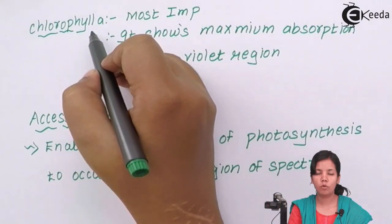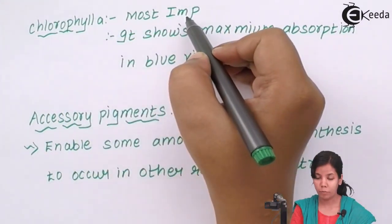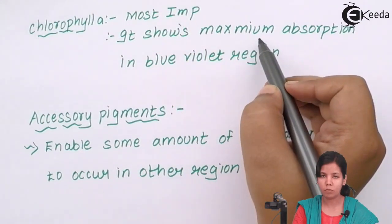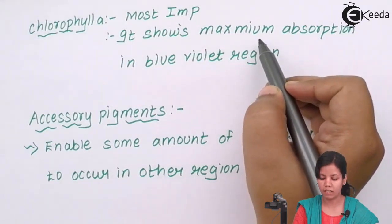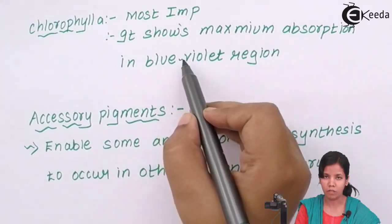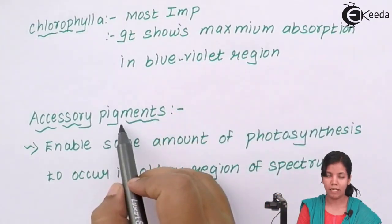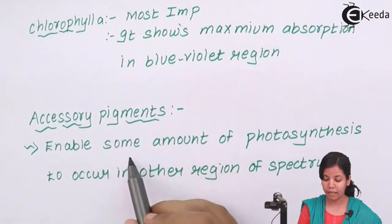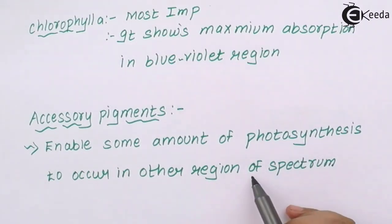Chlorophyll A is the most important pigment during photosynthesis. It shows maximum absorption, absorbing the greatest amount of photons or sun's energy in the blue to violet range of the visible spectrum. The accessory pigments — chlorophyll B, carotenoids, and xanthophyll — enable photosynthesis to occur in other regions of the spectrum.